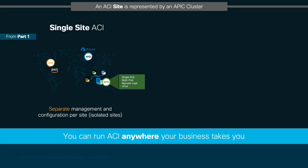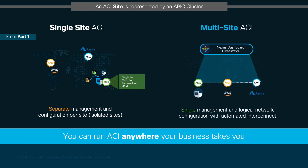In part 1 of this video, we covered the different fabric extension options for single-site ACI implementations. Now, let's take a brief look at how we can extend the networks across multiple ACI sites using Nexus Dashboard.